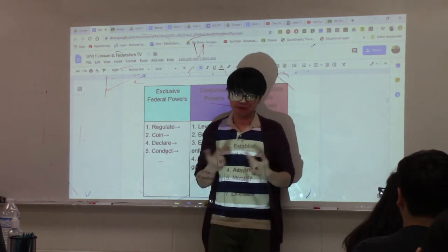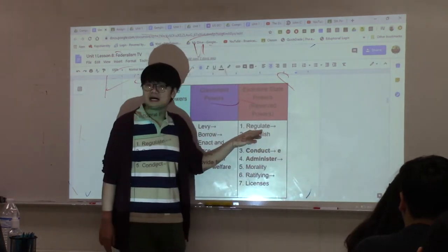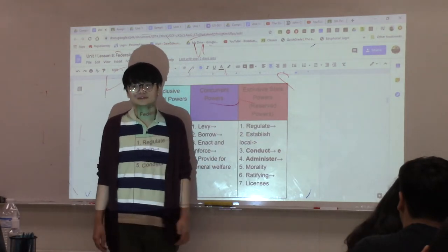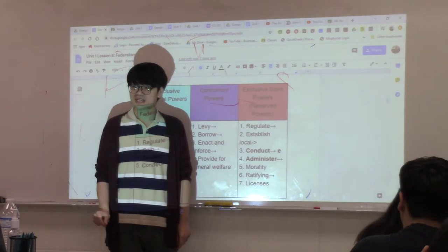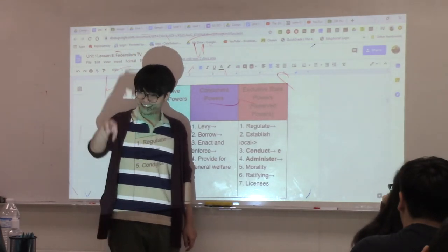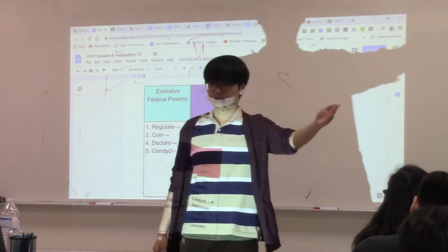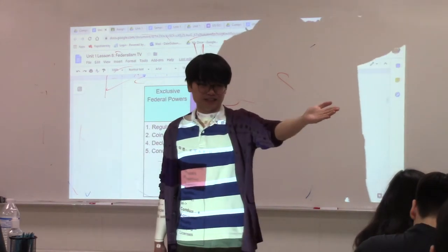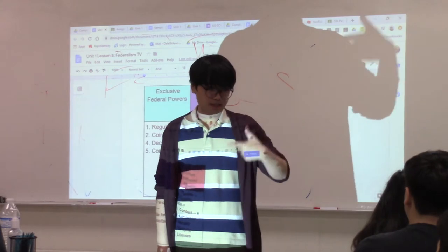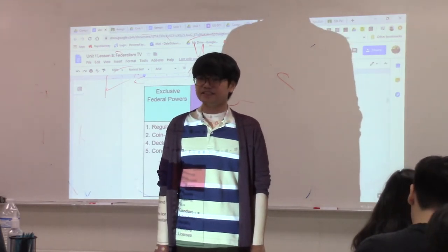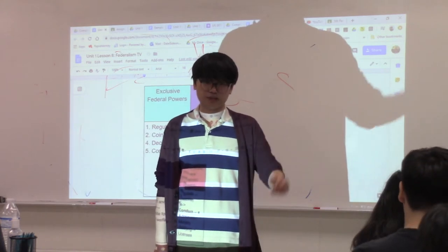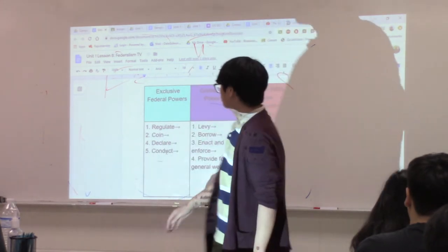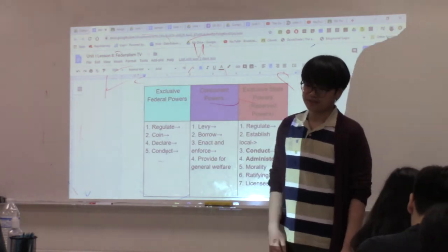If the U.S. government regulates interstate and international commerce, what can states regulate? Intrastate commerce — economic activity that happens within the state itself. For example, if someone is selling something within the state of Texas, that's intrastate commerce and the state can control it. But if the trade crosses state lines, it becomes interstate commerce under federal authority.